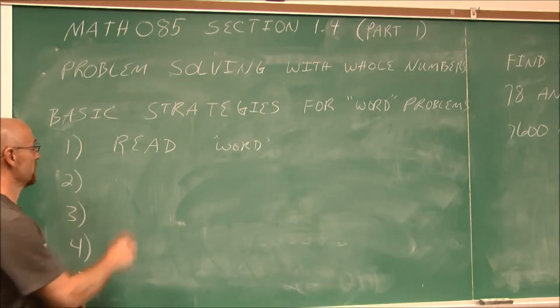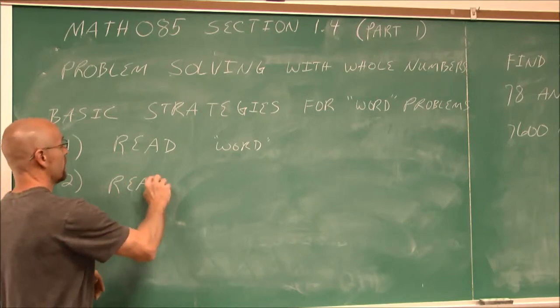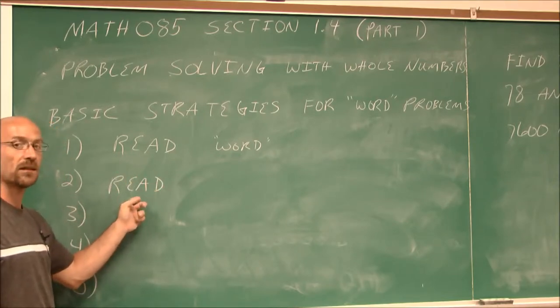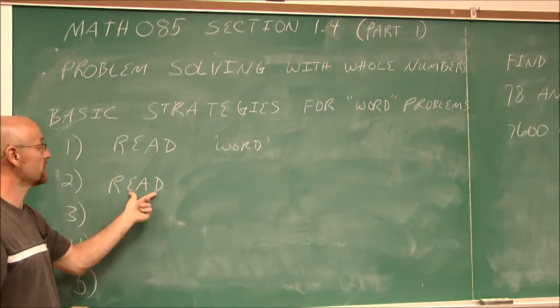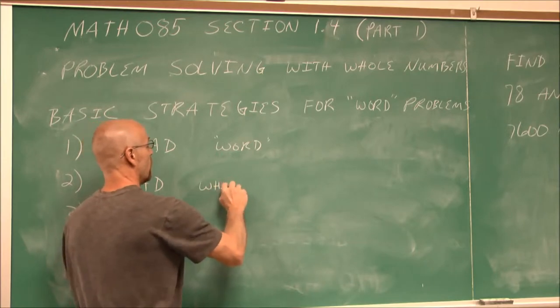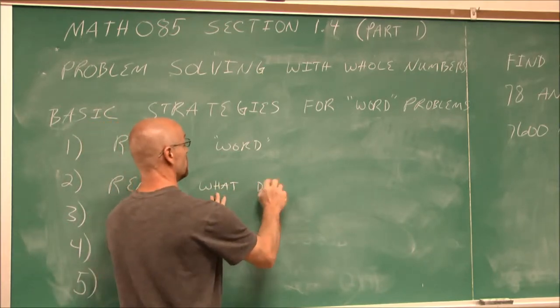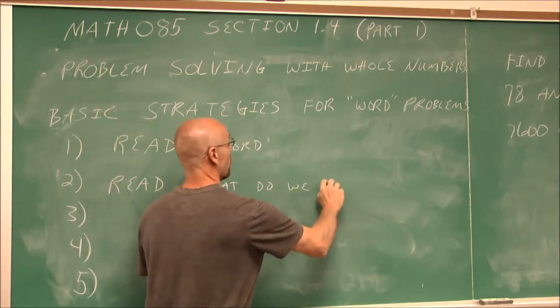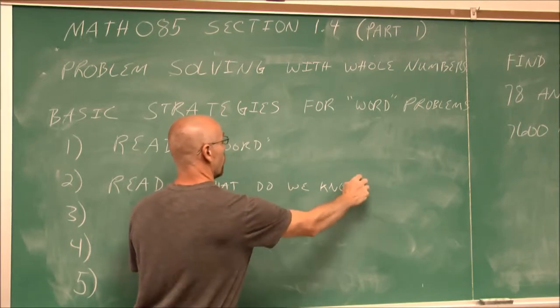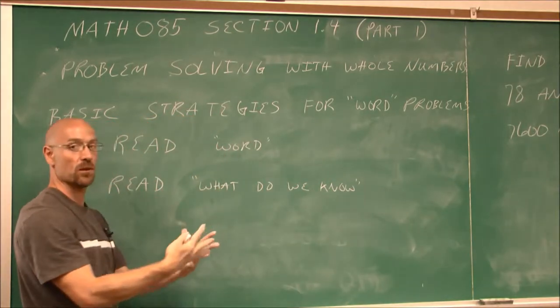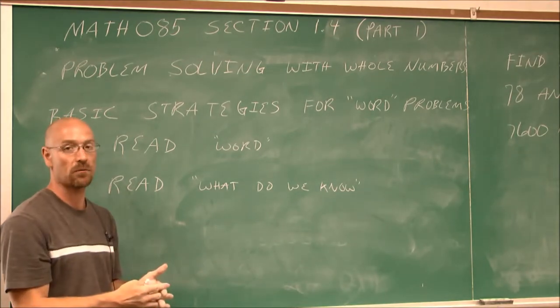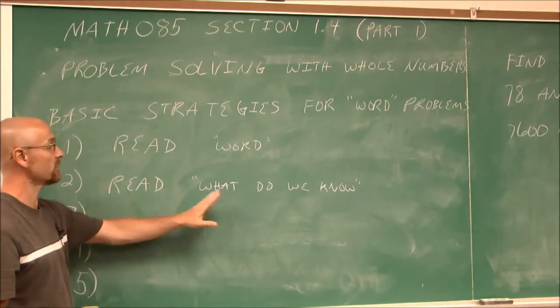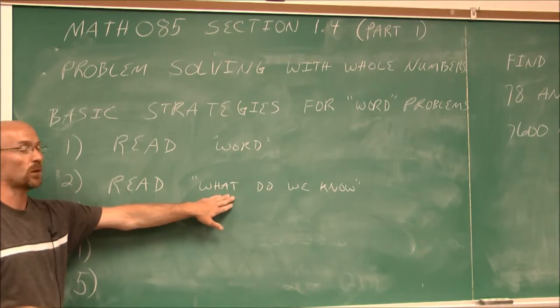The second step is to read it again. But this time, it isn't just to understand the words. We've already done that. This is to say, what's the given information? Or essentially, what do we know? What do we know? What's given to us? What are the actual values that I can use? What are the operations I'm going to apply? So we read it a second time saying, what's given to us?